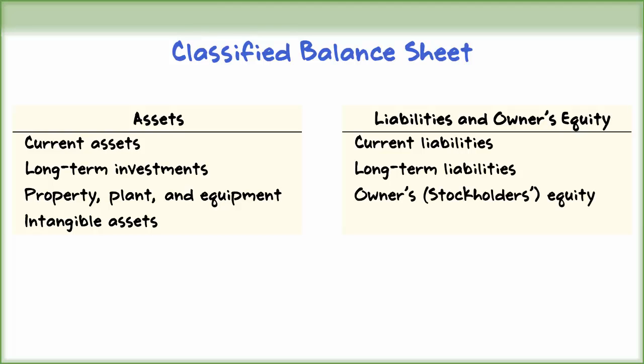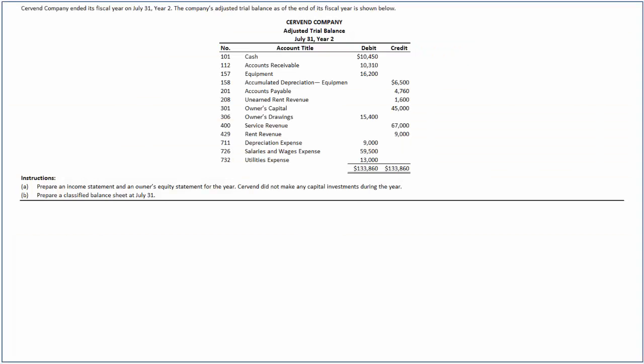Let's take a look at an illustration to see how we prepare financial statements. The adjusted trial balance of Servant Company at the end of the fiscal year July 31, Year 2 is provided. We are required to prepare an income statement, owner's equity statement, and a classified balance sheet.